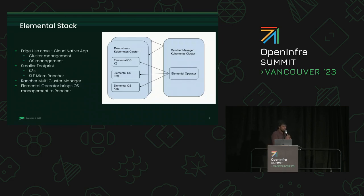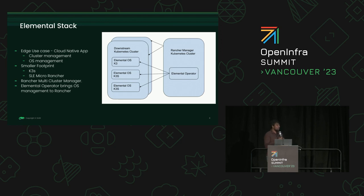We created an Elemental OS using Elemental Toolkit and booted into a virtual machine with everything pre-configured. Now, what's the use case? Imagine an edge location where you want to run a cloud-native app — a Kubernetes pod. One important aspect of edge is having the smallest footprint possible, which you can achieve using K3S and SLE Micro (SUSE's minimalistic OS with just the basic kernel and packages required to run K3S).